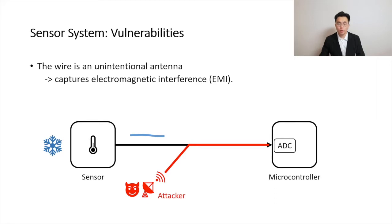For example, if the attacker manipulates the temperature sensor output of a cooling system of a nuclear reactor, the cooling system may not properly adjust the temperature of the nuclear reactor — a very dangerous case. Nowadays, we have different ways of attenuating attacking signals, such as shielding and filtering, but they cannot eliminate the attacking signal.